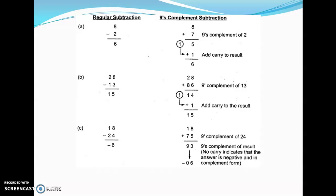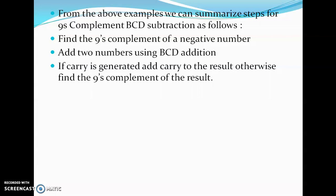Example C is different. Here we are subtracting 24 from 18. Since 24 is greater than 18, the regular subtraction method gives negative 6. In 9's complement subtraction, we calculate the 9's complement of 24, which is 75, and add it to 18, yielding 93. There is no end-around carry, which indicates the answer is negative. So we calculate the 9's complement of 93, which is 6, and place a negative sign in front of it.